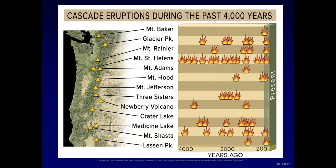This chart shows the frequency of eruptions of Cascade volcanoes during the past 4,000 years — which in geologic time is very recent. Ten volcanoes in the U.S. that are part of the Cascades erupted in the last 4,000 years. Mount St. Helens is the most active, with the highest frequency of eruptions. Mount Rainier has erupted in the last 200 years. Mount Hood, Lassen, and Mount Shasta have also had relatively recent eruptions. It's an active area.